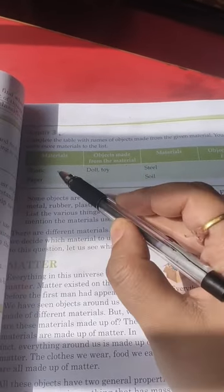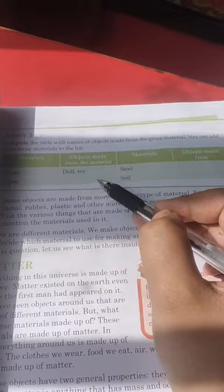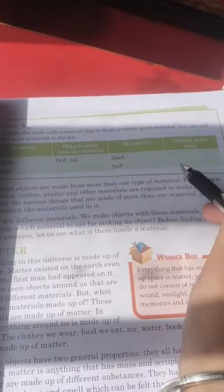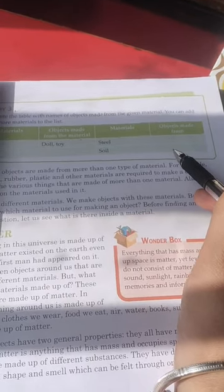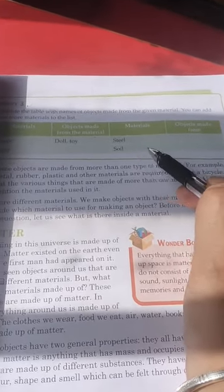Object made from the material - plastic se kaun kaun se materials bante hai? Doll, toy. Same, paper se kya hai? Notebooks, books. Soil se kya hai? Cosmetics. Jitni bhi aapke paas cosmetics hoti hai, rarely cosmetics is made up of the soil. So you have to write down that one.